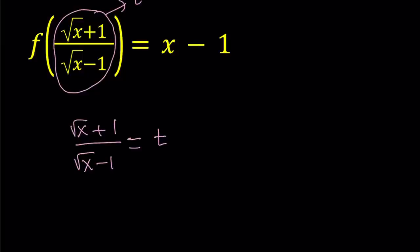So let's set square root of x plus 1 over square root of x minus 1 equal to t. Now my goal is the following. From this equation, I am going to solve for x in terms of t. And then whatever that x value is in terms of t, I'm going to substitute that here and then I'll be done.